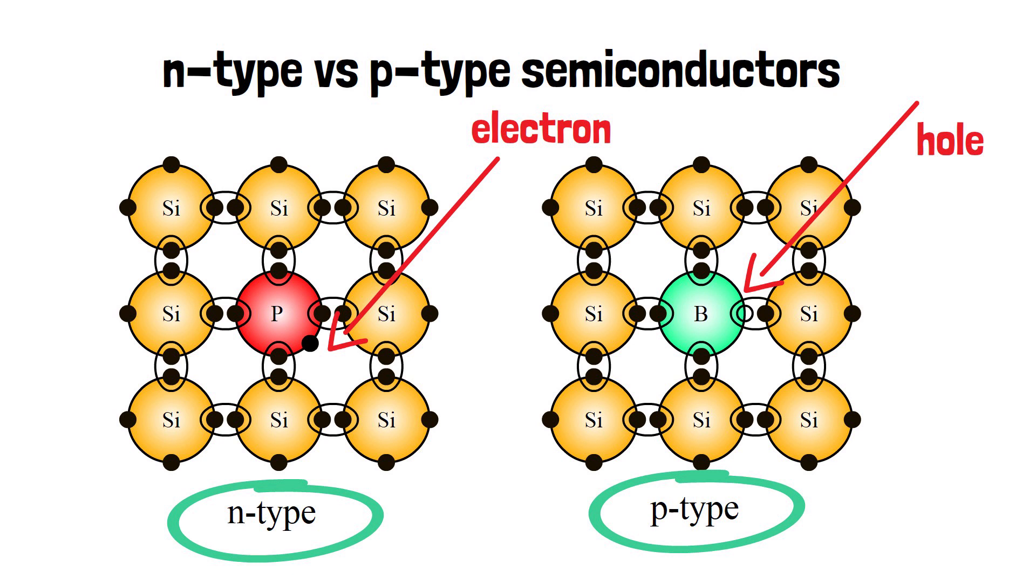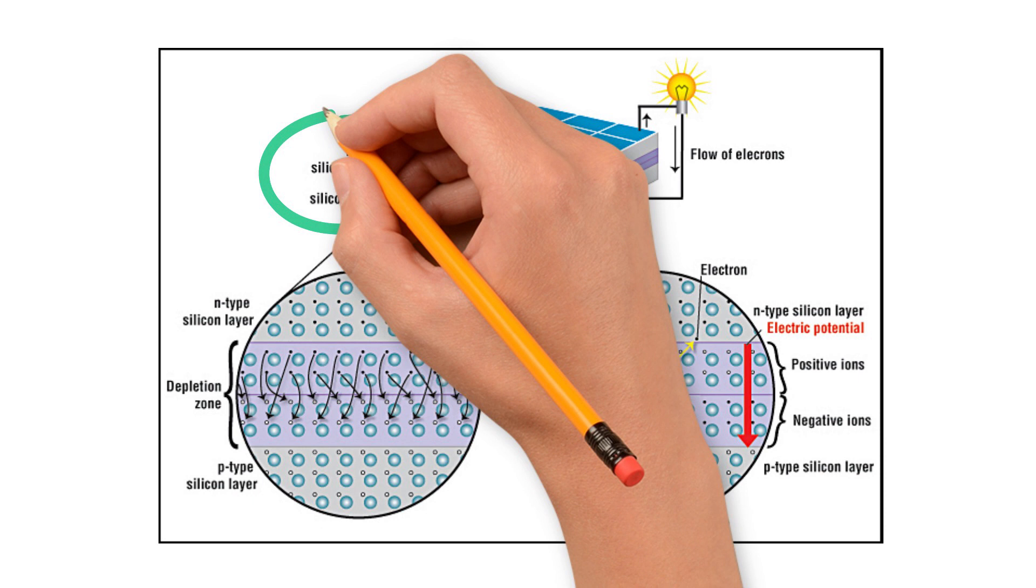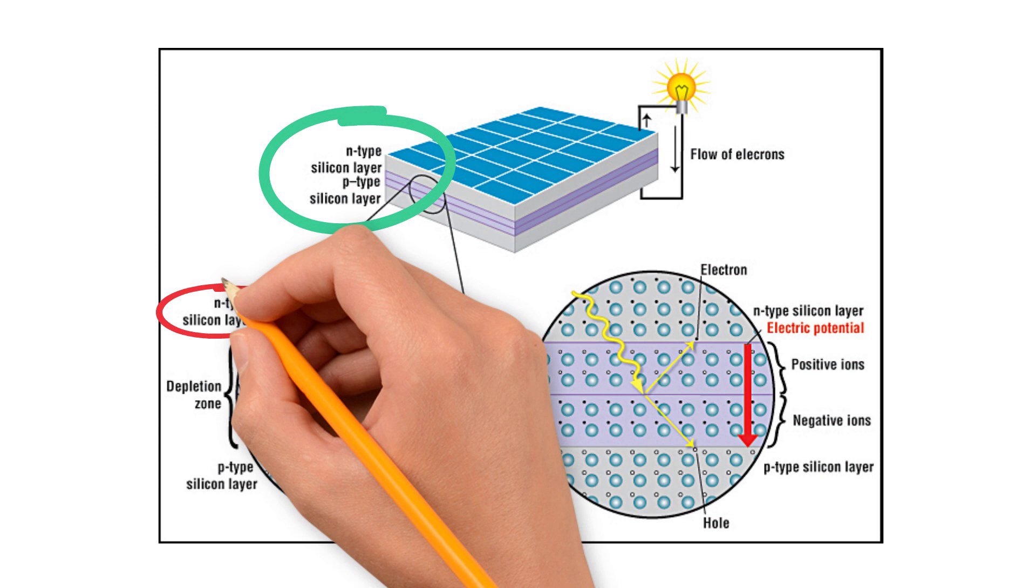A solar cell consists of a layer of p-type silicon placed next to a layer of n-type silicon. In the n-type layer, there is an excess of electrons, and in the p-type layer, there is an excess of positively charged holes.